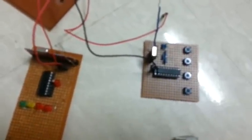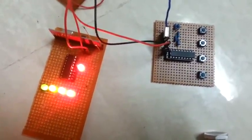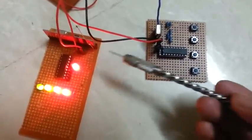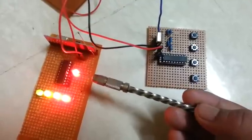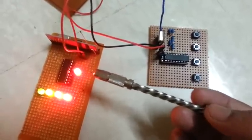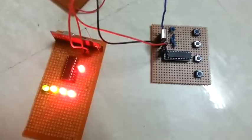For that purpose, we give supply to the transmitter end. As soon as we give supply to the transmitter, this LED glows, indicating that the connection has been established between transmitter and receiver. These four LEDs are glowing initially because we haven't sent any data.